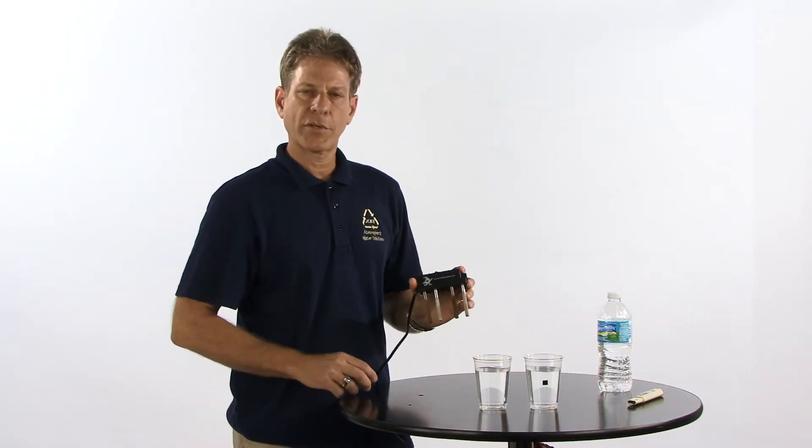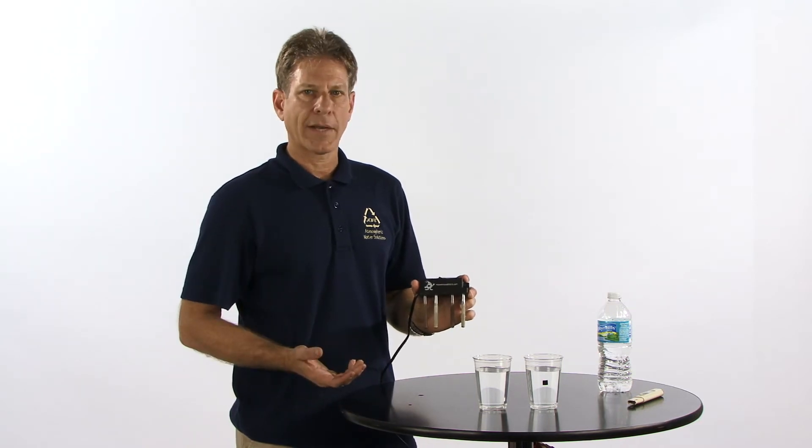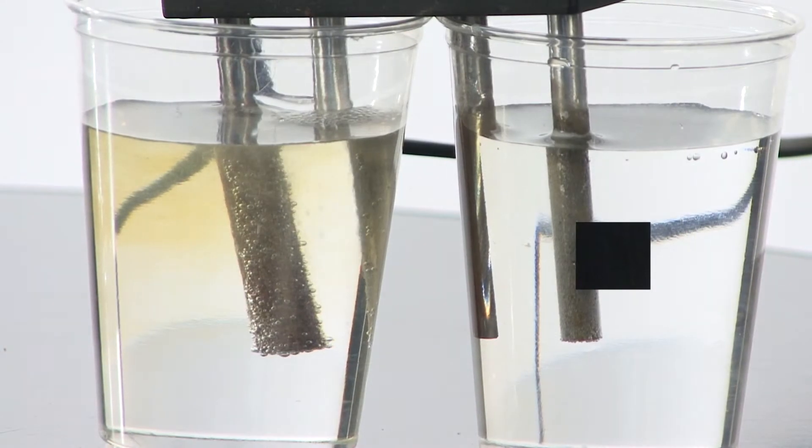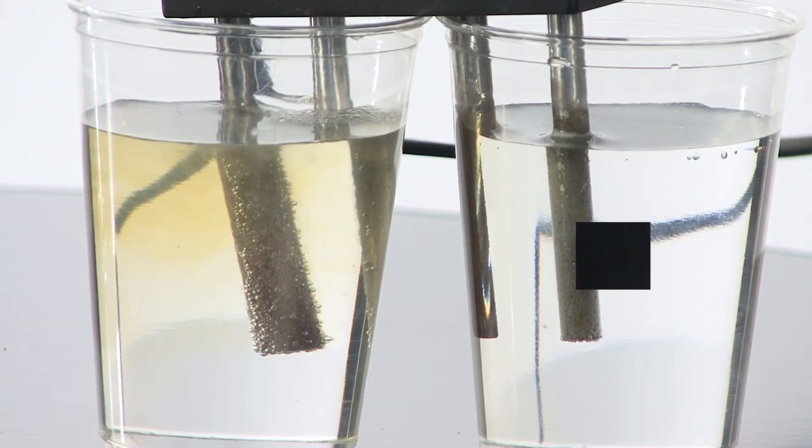So what I'm going to do now is what we call a precipitator test. This is a precipitator. It's an electric magnet and what we're going to do is we're going to put this electric magnet into the two glasses of water and turn it on.